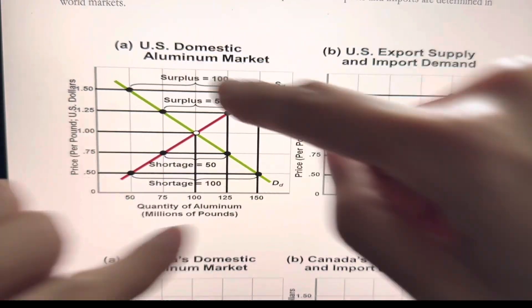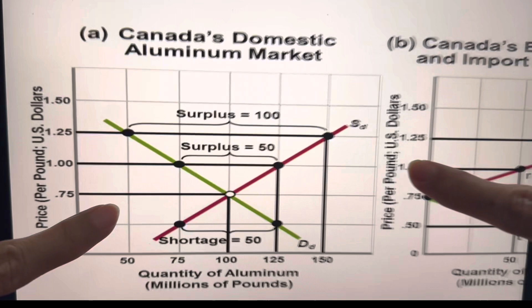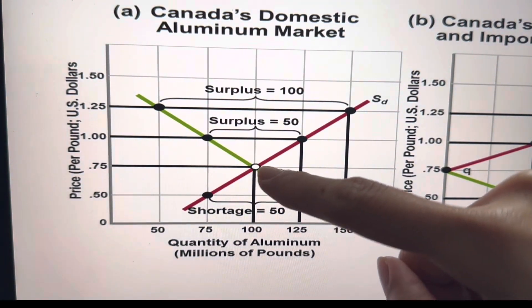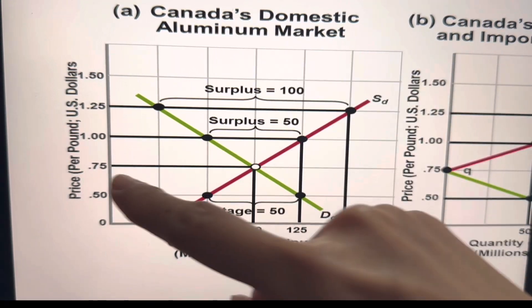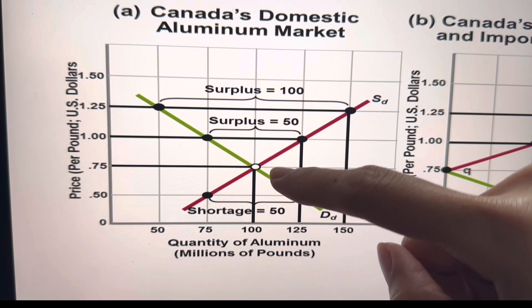So this is for one country, U.S. You can look at another country, Canada. Same thing here. We have the equilibrium domestic price in Canada, which is $0.75. This is where the point of equilibrium is.